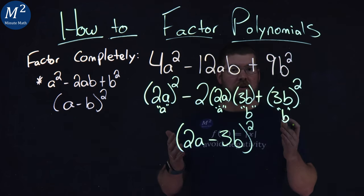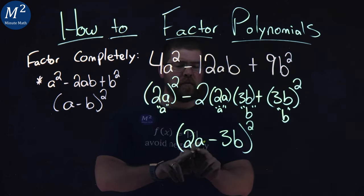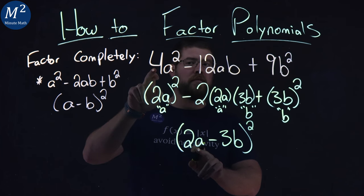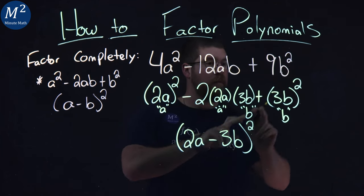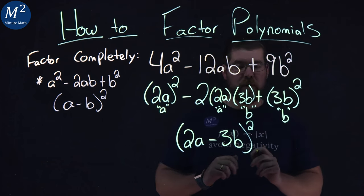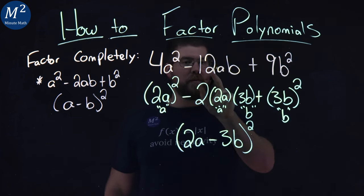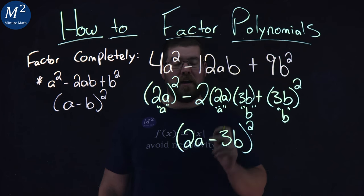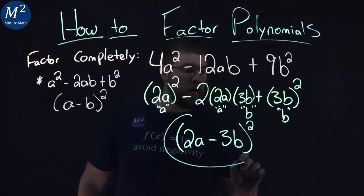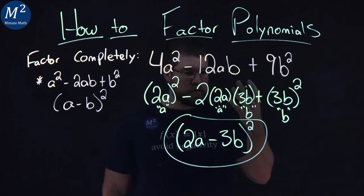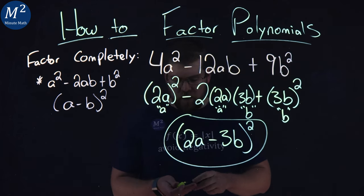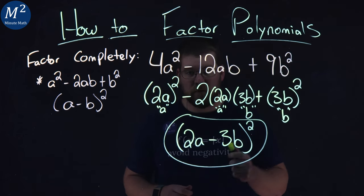And there we have it. Let's quickly double-check by foiling this out. 2a times 2a is 4a². Negative 3b times negative 3b, positive 9b². 2a times -3b times 2 gives me -12ab. Either way, our polynomial factors to (2a - 3b)².